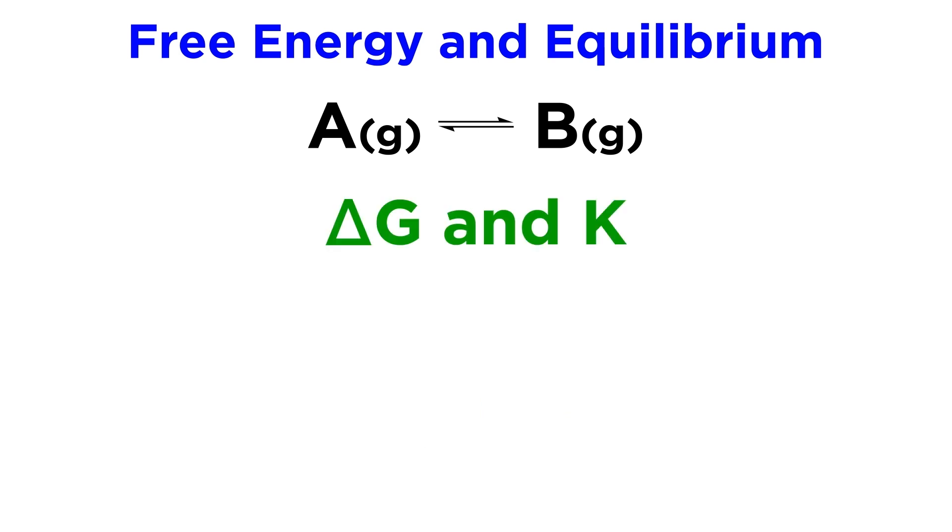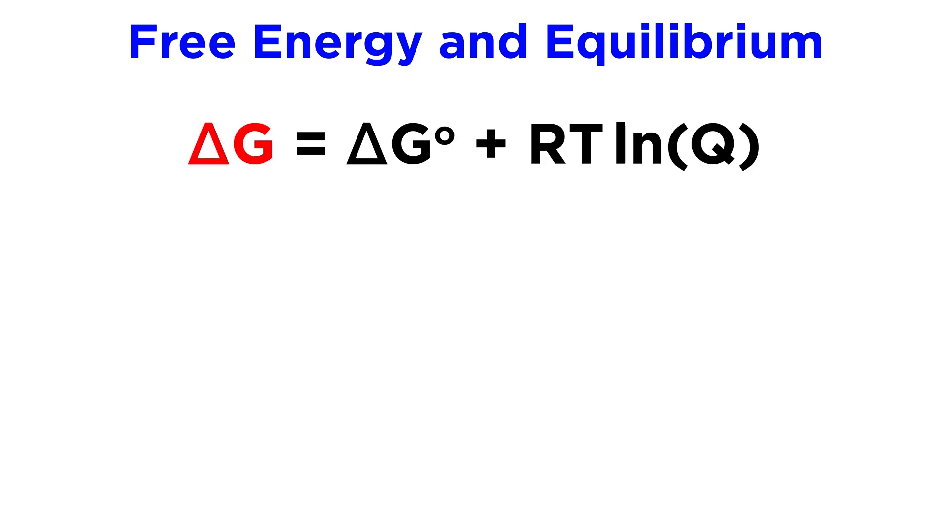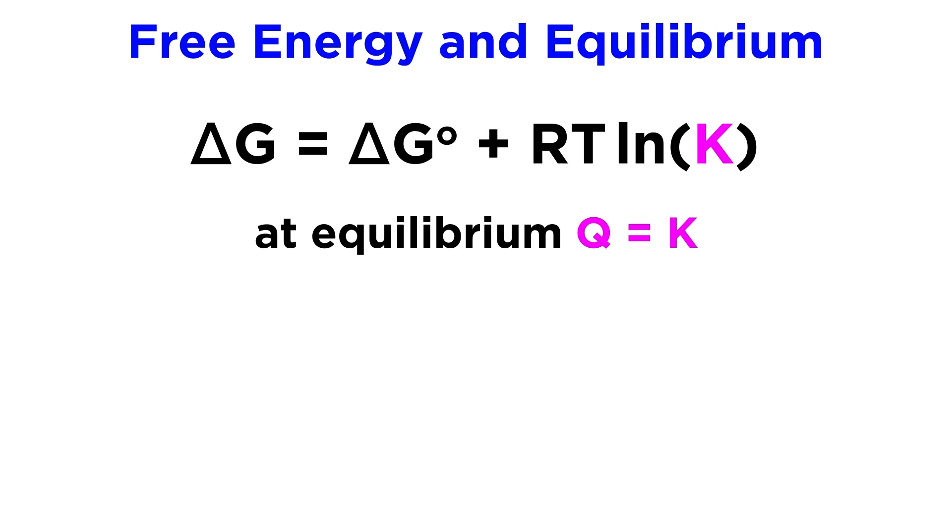Let us therefore outline a different equation which describes how delta G correlates with the equilibrium constant K. As we recall, the change in free energy equals the standard change in free energy plus the gas constant times temperature in Kelvin times the natural log of the reaction quotient Q. We know that at equilibrium Q equals K, so let's swap K in for Q.